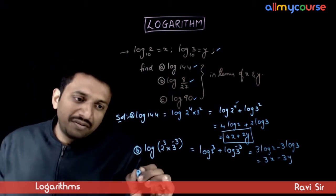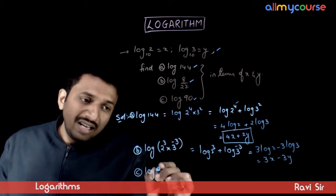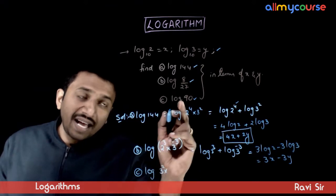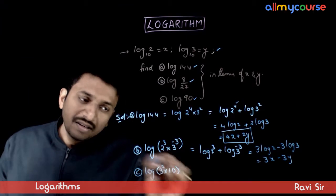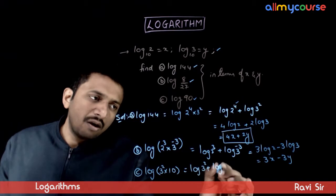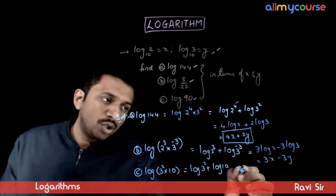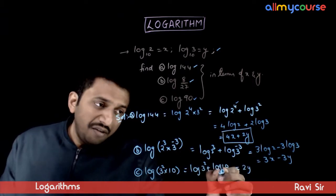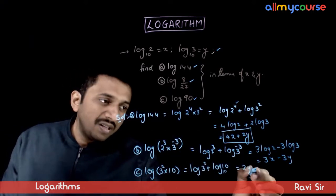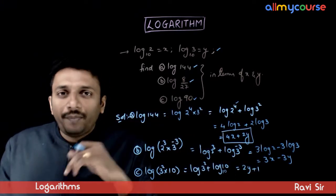Now if you go to the third question, log 90 can be prime factorized as log 3 square times 10. That is equal to log of 3 square plus log of 10. That is equal to 2 log 3, that is 2y, and log 10. The default base is 10, so log 10 to the base 10. If the base and the argument are same, the answer is 1. So log 90 will be equal to 2 times y plus 1.